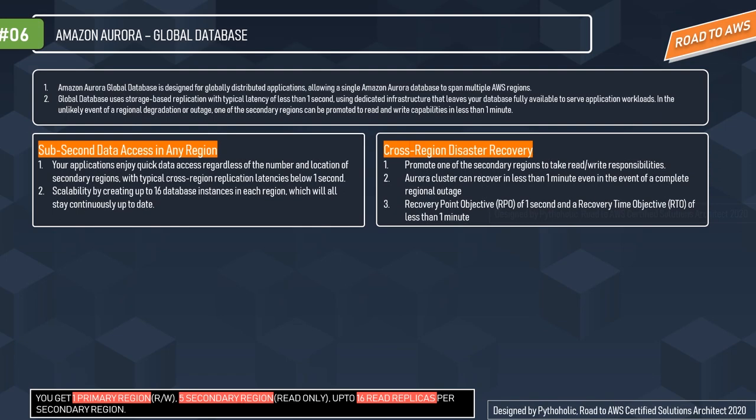Now let's discuss Aurora Global Database. Amazon Aurora Global Database is designed for globally distributed applications, allowing a single Amazon Aurora database to span multiple AWS regions. This means you can have your database across multiple geographical locations — for example, if you have a database at Mumbai in Asia, you can have the same in Oregon in the USA.